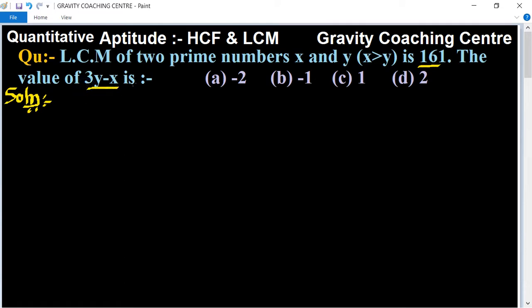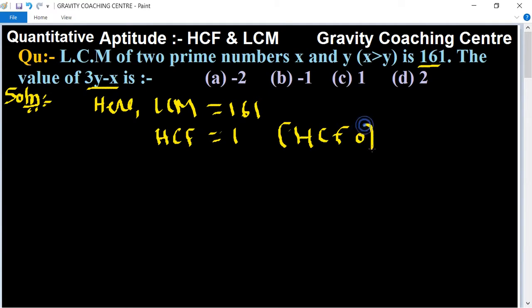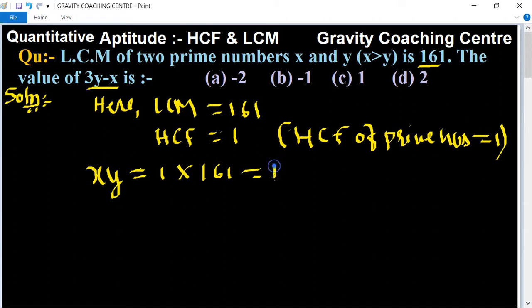of 3Y minus X is what? Given: LCM is 161 and HCF equals 1, because the HCF of prime numbers equals 1. So the product of two numbers, X times Y, equals HCF times LCM, which is 1 times 161 equals 161.